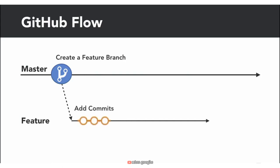Once your branch has been created, it's time to start making changes. Whenever you add, edit, or delete a file, you're making a commit and adding them to your branch. Commits also create a transparent history of your work that others can follow to understand what you've done and why. Each commit has an associated commit message with a description explaining why a particular change was made — this is important when you want to look at previous changes to your project.